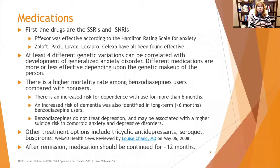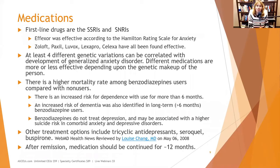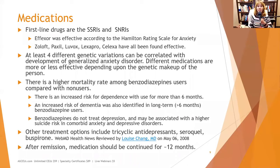Benzodiazepines also don't treat depression. So if you've got someone with concurrent anxiety and depression, there's a much higher suicide risk if they're on benzodiazepines — typically from overdose, but not always. Other treatment options when benzos aren't wanted and SSRIs/SNRIs don't seem to be working include tricyclic antidepressants — the older generation — which can be tried.